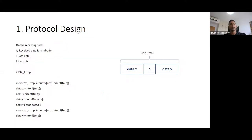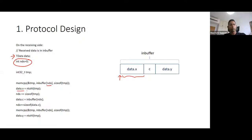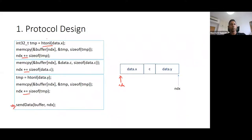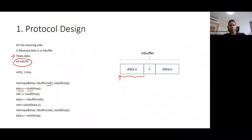We send the buffer over. On the receiver side, we create a variable with a similar data structure and copy from the input buffer with the index initially pointing to zero. We copy the data for x, then convert from network to host — the reverse of what we did on the sender side. The pointer is then incremented, and we do the same for c and then y. This is what we did originally in the serialization.